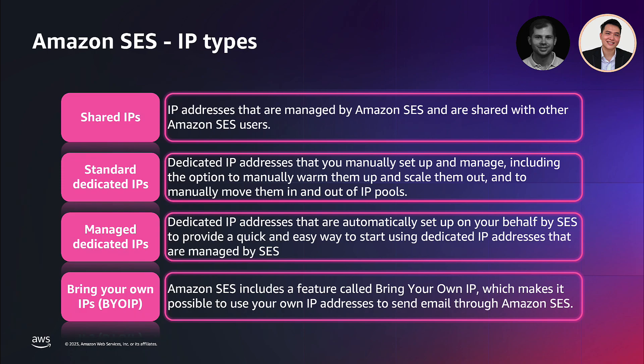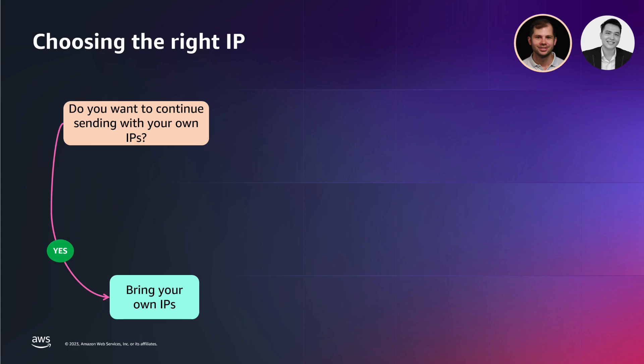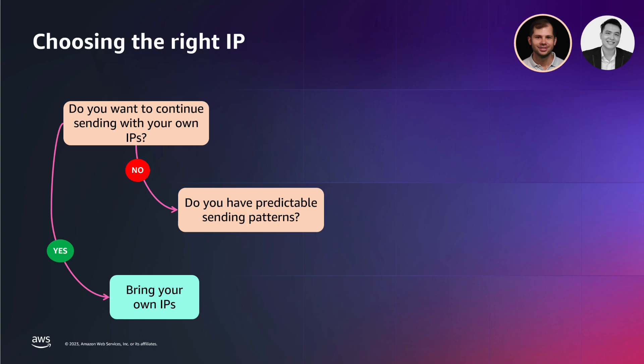Now that you have a high-level understanding of each IP type that Amazon SES offers, let's look at the factors you need to consider in order to choose the right IP type. To help you choose, you can use the decision tree below and ask four questions. The first is: are you migrating from another email service provider where you used dedicated IPs and would like to continue using them with Amazon SES? If so, bring your own IPs might be an option to consider. The second question is: do you have a predictable sending pattern — sending roughly the same number of emails daily without random spikes? If you are expecting spikes or periods where few to no emails go out, then shared IPs is the right option.